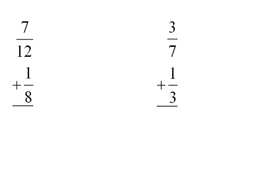We can also add fractions that are set up vertically like this, and it's maybe sometimes a little bit easier to look at them vertically. Again, we are adding these two fractions, 7 twelfths plus 1 eighth.